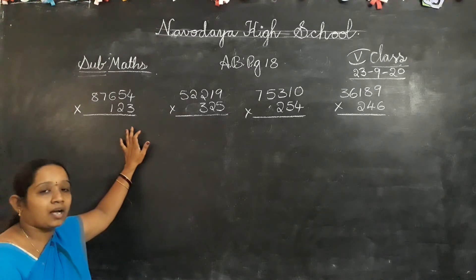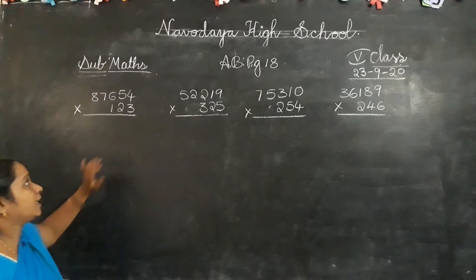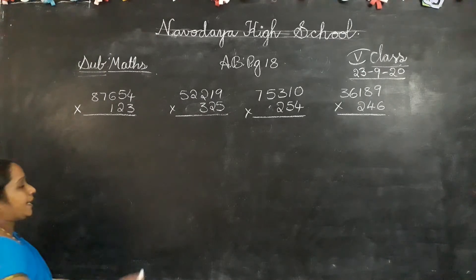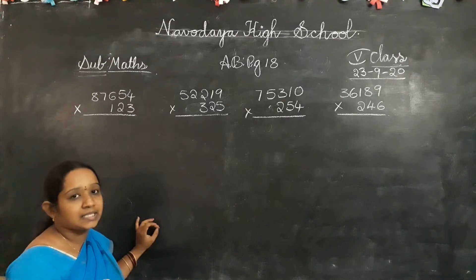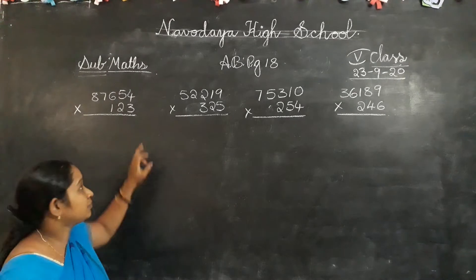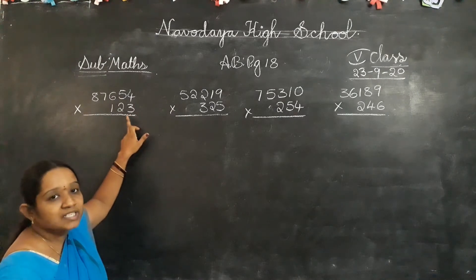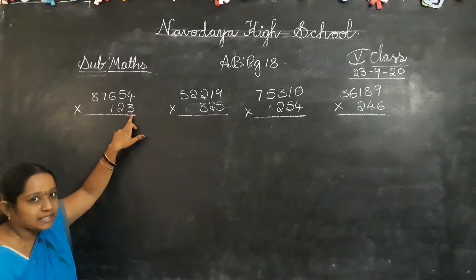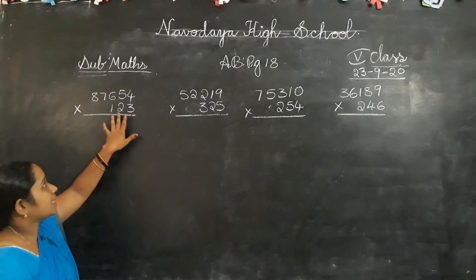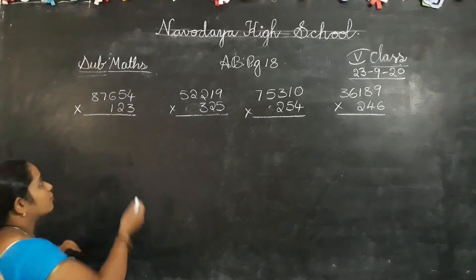You have already learnt 20 tables, children. Now look here. Additions, subtractions, multiplications all start from the 1's place, children. First multiply with the 1's place digit. This is a 3-digit number multiplication, children.